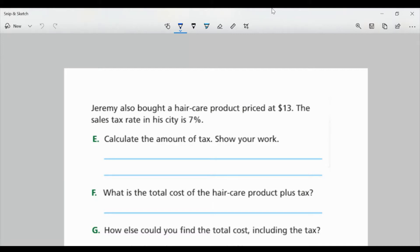Let's look at the second half of Task 1. Jeremy also bought a hair care product priced at $13. The sales tax rate in his city is 7%. So for Part E, calculate the amount of tax. Show your work. So we want to find out how much he's paying in taxes. Well, I know it's 7% of $13. So we would do that by converting 7% to a decimal. So I want to go 7 divided by 100, which would give me 0.07 or 7 hundredths. And we're going to take that amount and multiply it to $13.